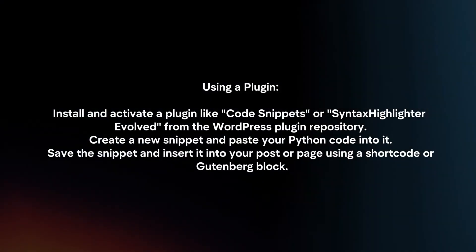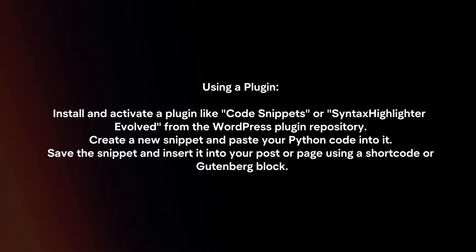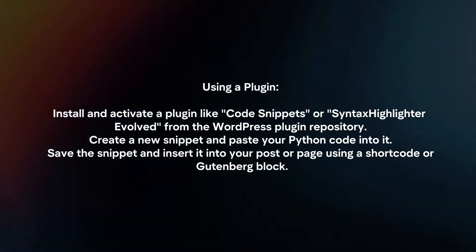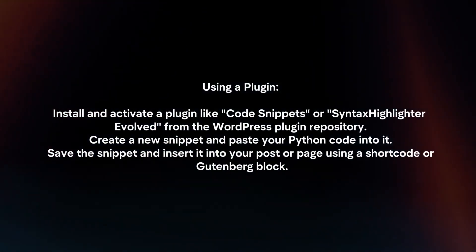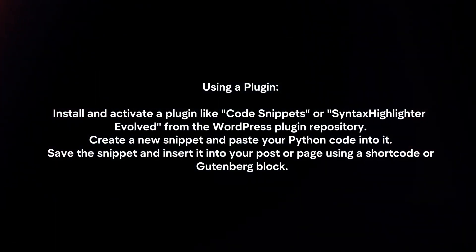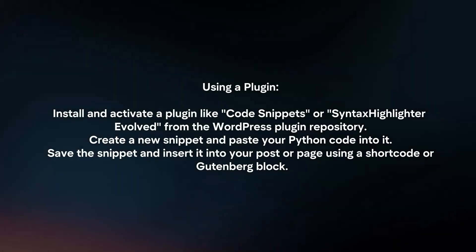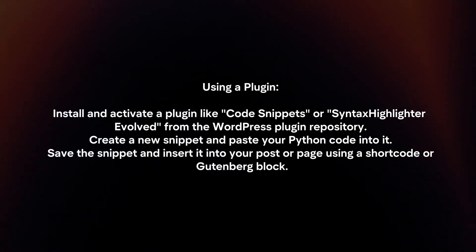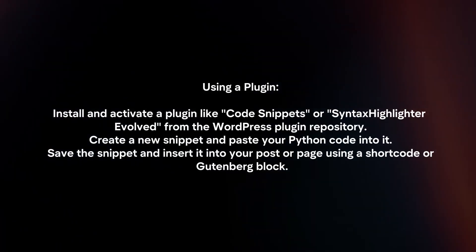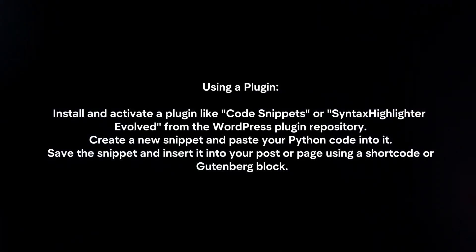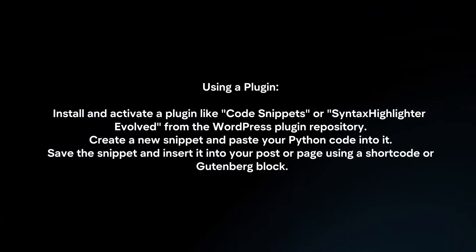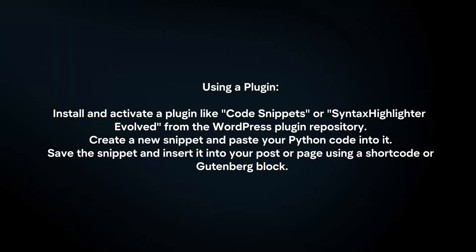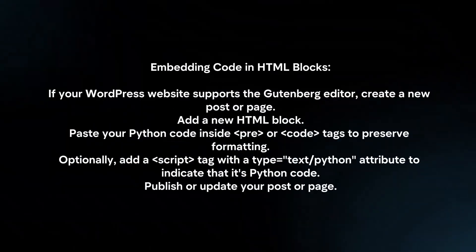Install and activate a plugin like Code Snippets or Syntax Highlighter Evolved from the WordPress plugin repository. Create a new snippet and paste your Python code into it. Save the snippet and insert it into your post or page using a shortcode or Gutenberg block.